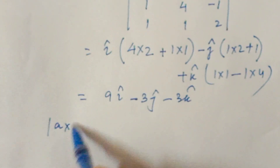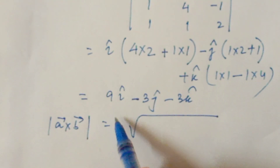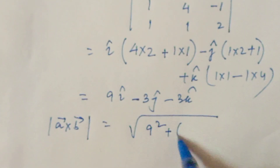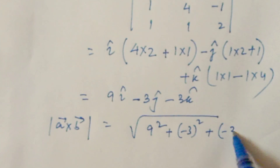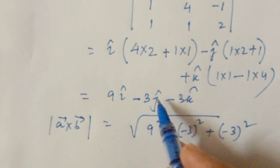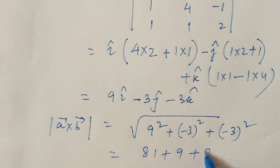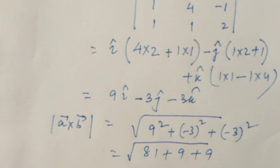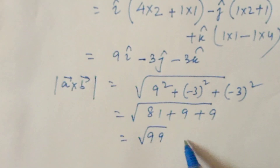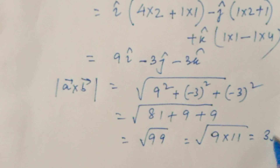Now find the magnitude of a cross b. The magnitude is the square root of the sum of squares of all components: square root of 9 squared plus minus 3 squared plus minus 3 squared, which is square root of 81 plus 9 plus 9 equals square root of 99. That is square root of 9 times 11, which equals 3 root 11.